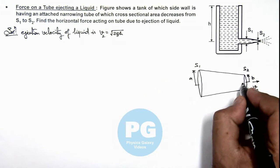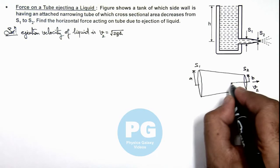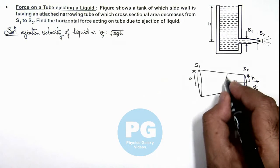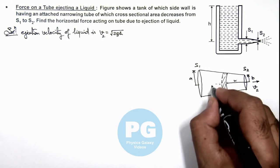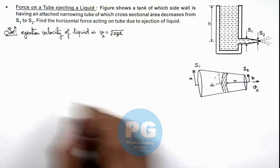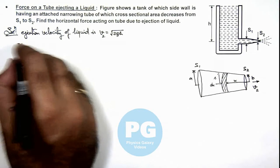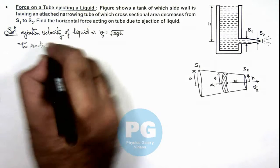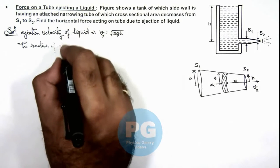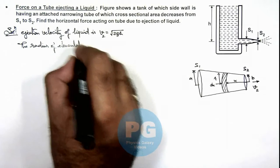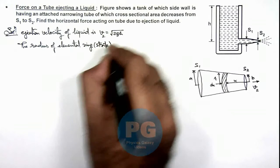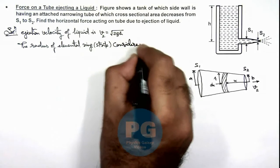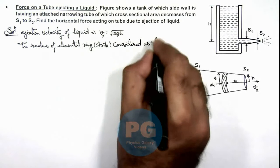Now if at a distance x inside the tube we consider a small elemental section which is of width dx, and its radius if we consider as r, then we can write the radius of elemental ring, or we can also call it as strip, considered as shown.